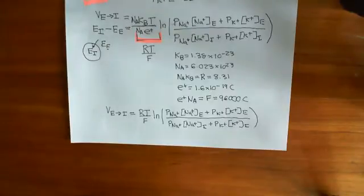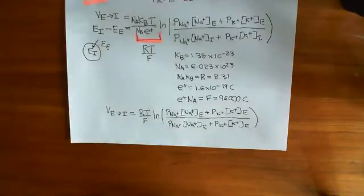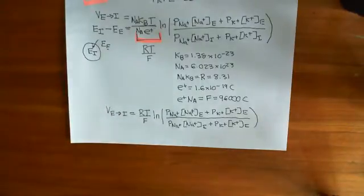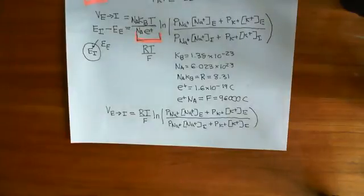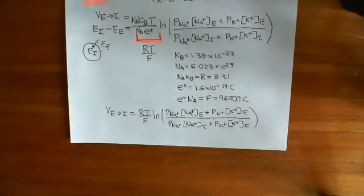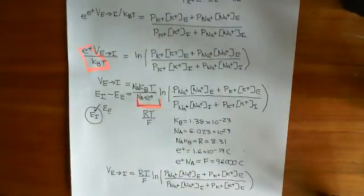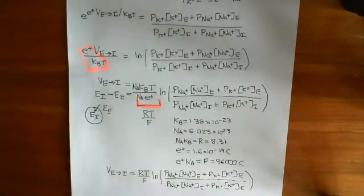You might think about other ions — and you are correct, there are other ions. You can try, as an interesting exercise, to build a bigger equation taking into account things like chloride or even calcium. If you do that, you have to be very careful because chloride has a negative charge and calcium has a plus-two charge. A chloride anion moving in one direction is the same as moving a positive ion in the opposite direction.